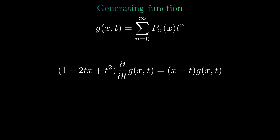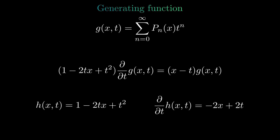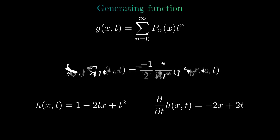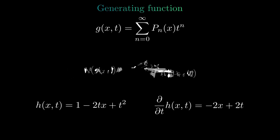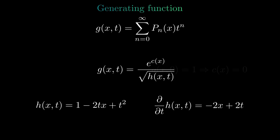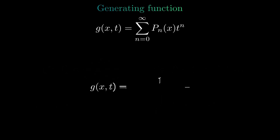By summing over all n, we get a differential equation involving only the generating function. The first term on the right side looks similar to the derivative of the first term on the left side, so we call the left-side term h. Rewriting the differential equation and separating h and g, we integrate on both sides. Finally, we get an expression for g. To find c, we set t equal to 0, giving g equal to 1, so c is always equal to 0. This yields the explicit expression for the generating function of the Legendre polynomials.